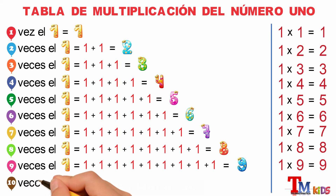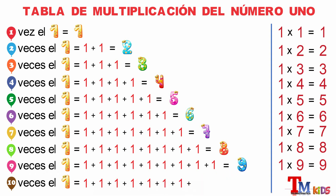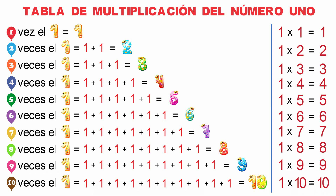10 veces el 1 es igual a 1 más 1 más 1 más 1 más 1 más 1 más 1 más 1 más 1 más 1 es igual a 10. Y escrito como una multiplicación sería 1 por 10 es igual a 10. ¡Muy bien!